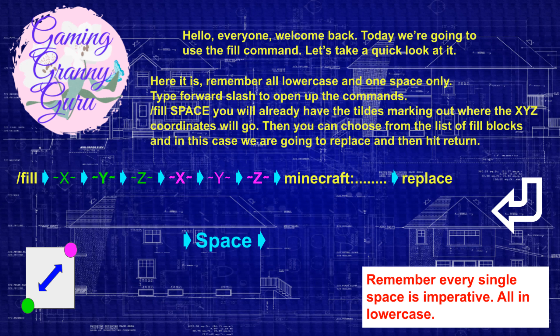Now for the water. So again we need to hit forward slash fill, type in the coordinates, we want to start at minus 2, and we want to finish at 0. Minecraft water, and we want to replace. Oh dear. Zero would appear to be the block above minus 1, which makes sense because minus 2 plus minus 1 is two blocks of water.